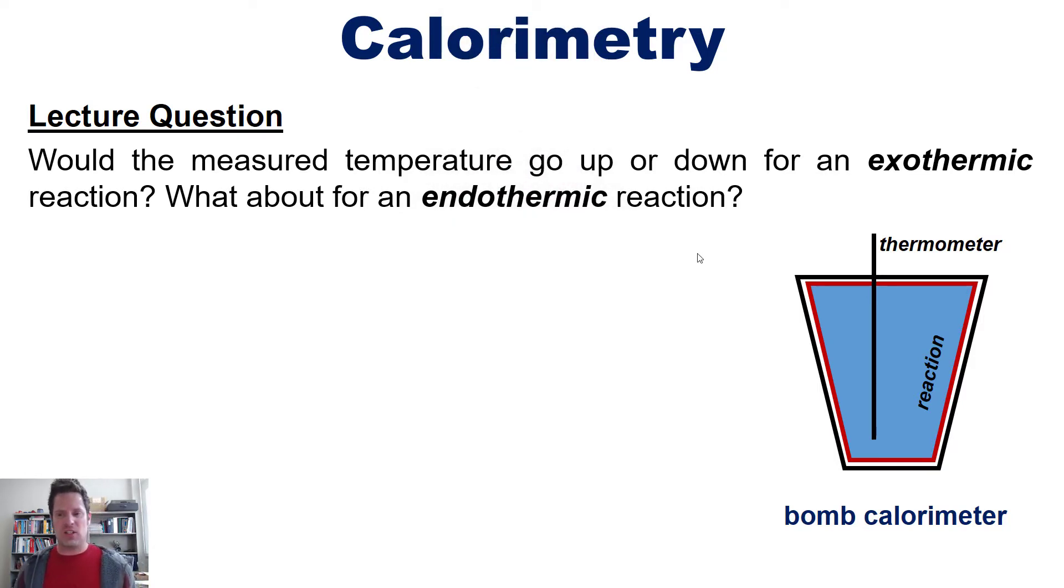All right, here's the answer. As you should know from earlier videos linked to in the description below and floating over my head here, an exothermic reaction is one that produces heat. So it kicks heat out of the reaction as the reaction transpires. This means that if you had an exothermic reaction going in here, it would be producing heat and kicking heat off as a product. This means that the temperature for an exothermic reaction as you measured it in a bomb calorimeter would go up.